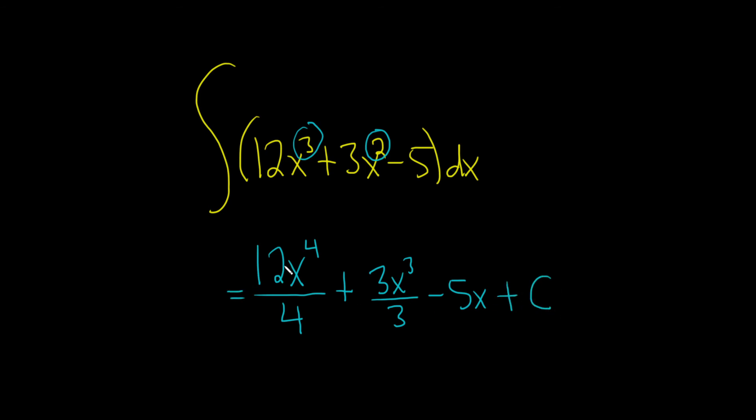The last thing to do is maybe simplify this a little bit. Four goes into 12 three times, so this is 3x to the four. These cancel, so we get plus x cubed, and then minus 5x. And don't forget our constant of integration, capital C. I hope this video has been helpful.